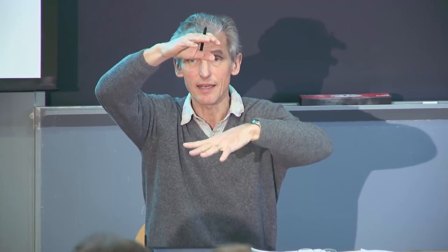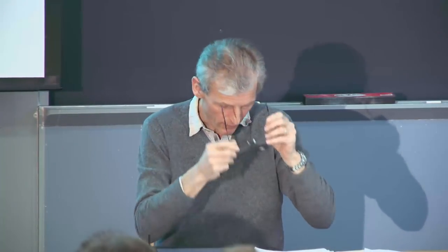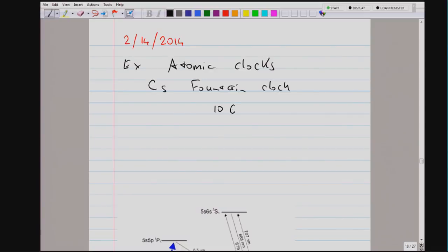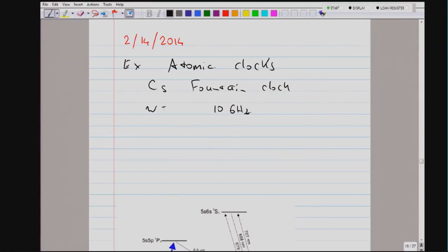Some of you know that the cesium atom has hyperfine structure — in one state the electron and nuclear spin are parallel, in the other they are antiparallel. The transition frequency is approximately 9-point-something gigahertz, which for this discussion we call 10 gigahertz. The definition of one second is in terms of so many cycles of this transition. For decades, this frequency was determined in an atomic beam.